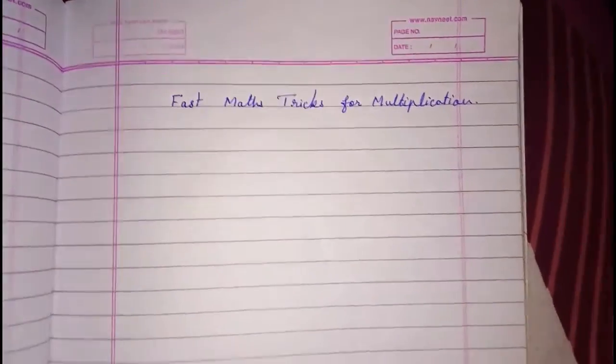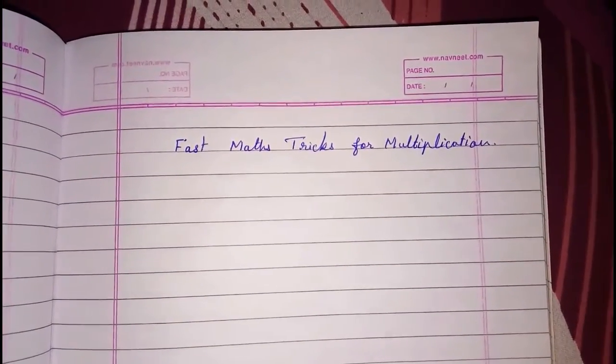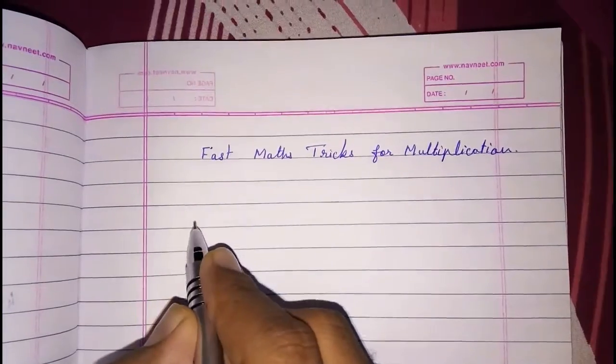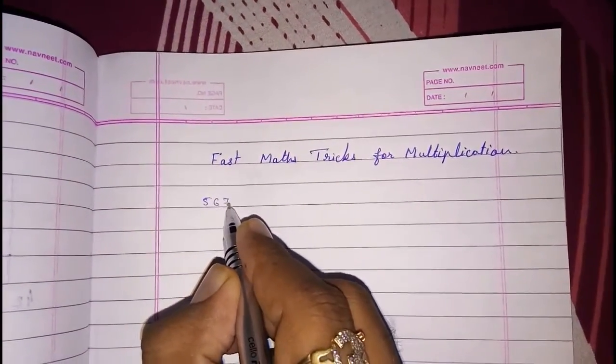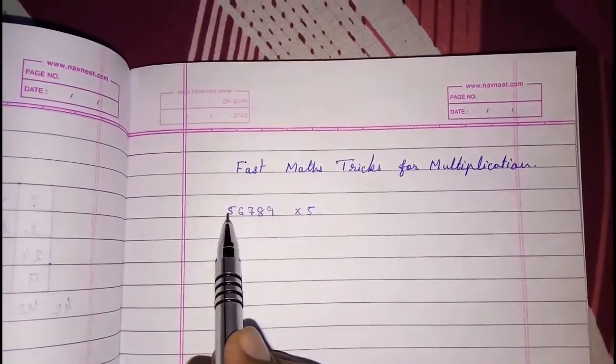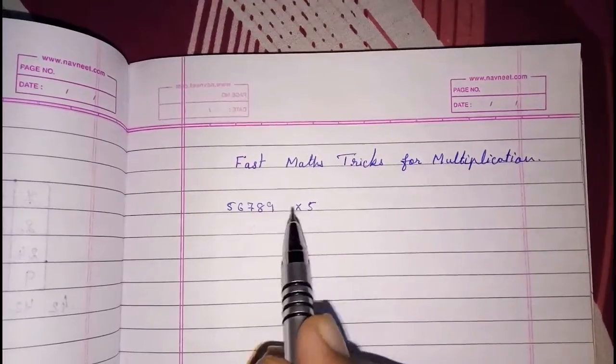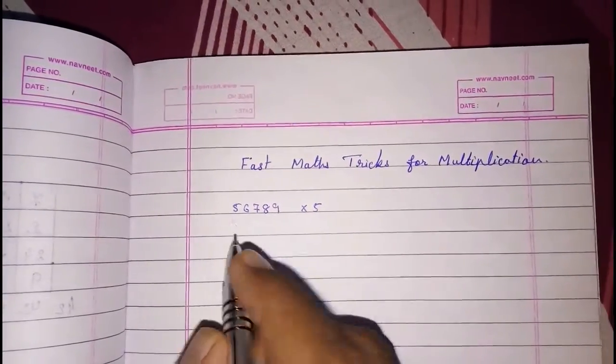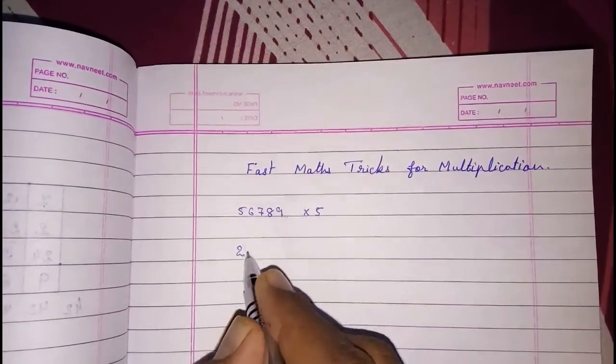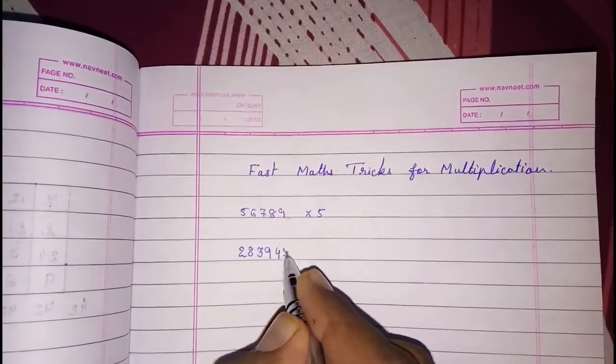So I'm going to tell you some tricks which will be very useful for all multiplication. There are many tricks, but we'll start with multiplying with 5, 25, or 125, then I'll move on to another number, and at last I'll tell you a big trick which will be very useful. Look here, if I want to multiply any big number like 56789 into 5, what are we going to do? We directly multiply this whole number with 5 and then we get the answer, but it will take too much time. The direct answer is 283945.